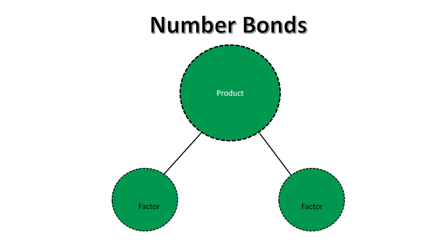In multiplication, the whole is called the product and the two parts are called factors. Each factor is multiplied together to get the product.